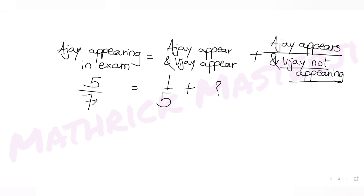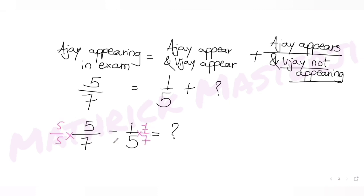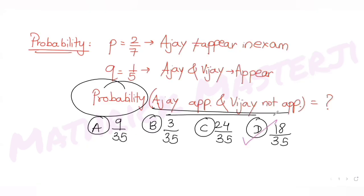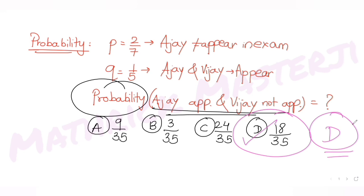So: P(Ajay appears, Vijay not appearing) = P(Ajay appears) - P(both appear) = 5/7 - 1/5. Making the denominator the same: (5×5)/(35) - (1×7)/(35) = 25/35 - 7/35 = 18/35. The answer choice that matches is option D, so D is the correct answer.